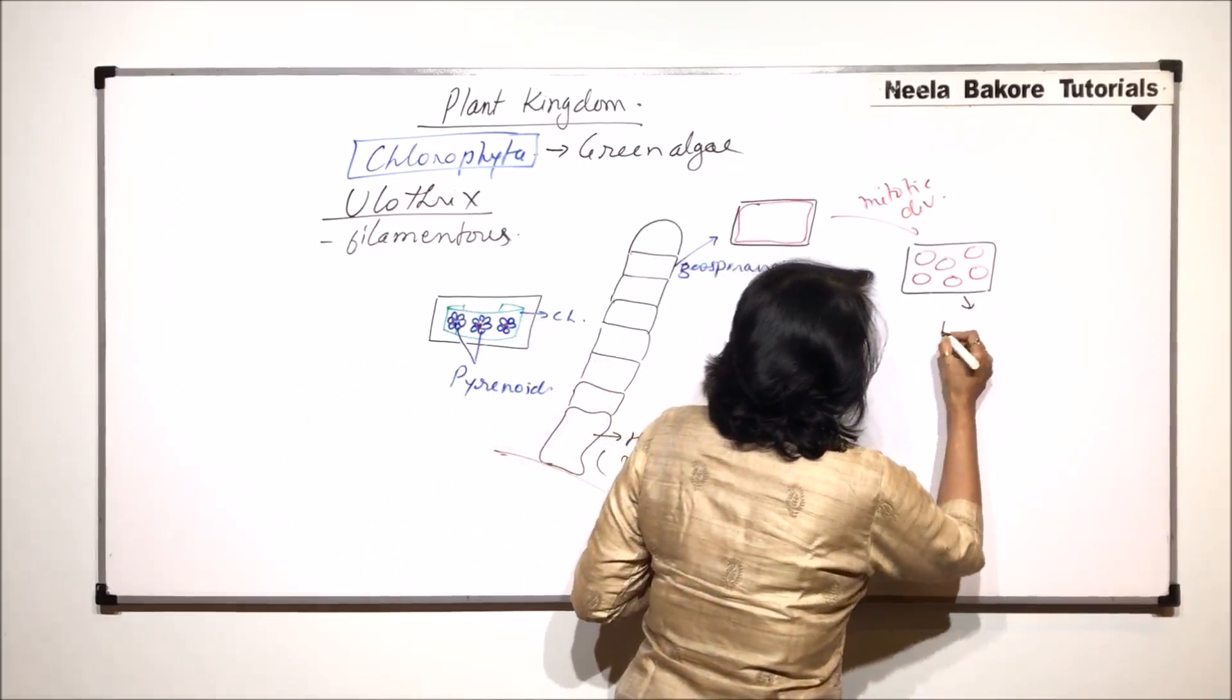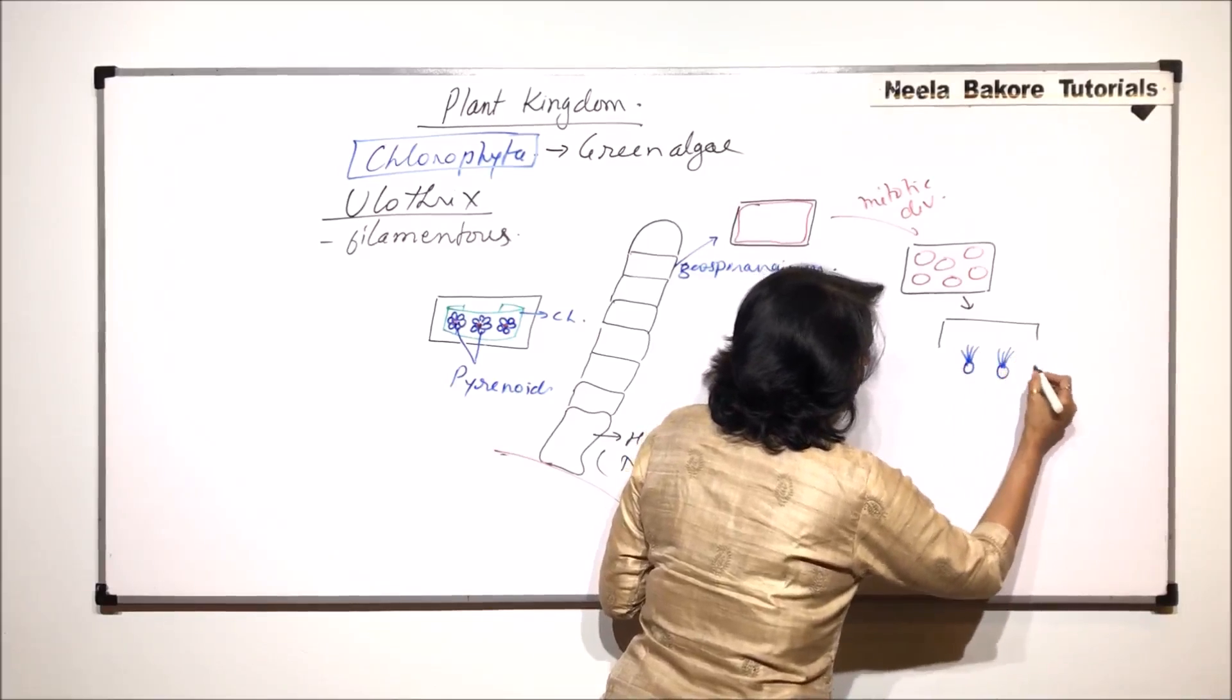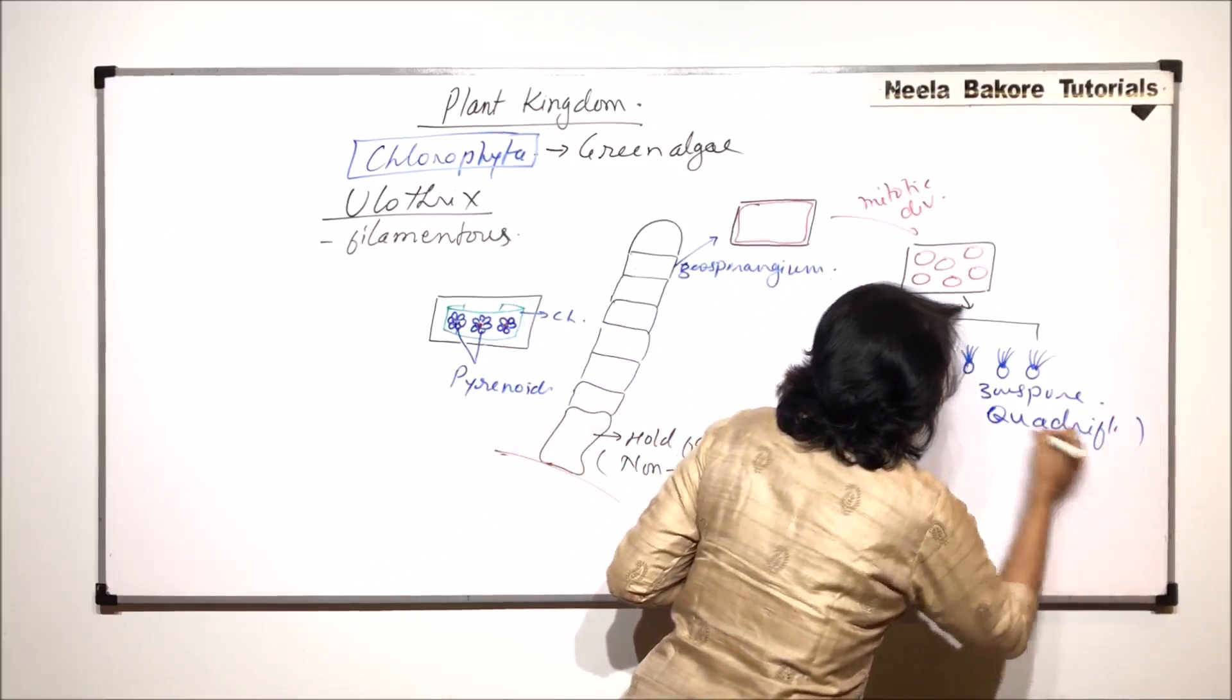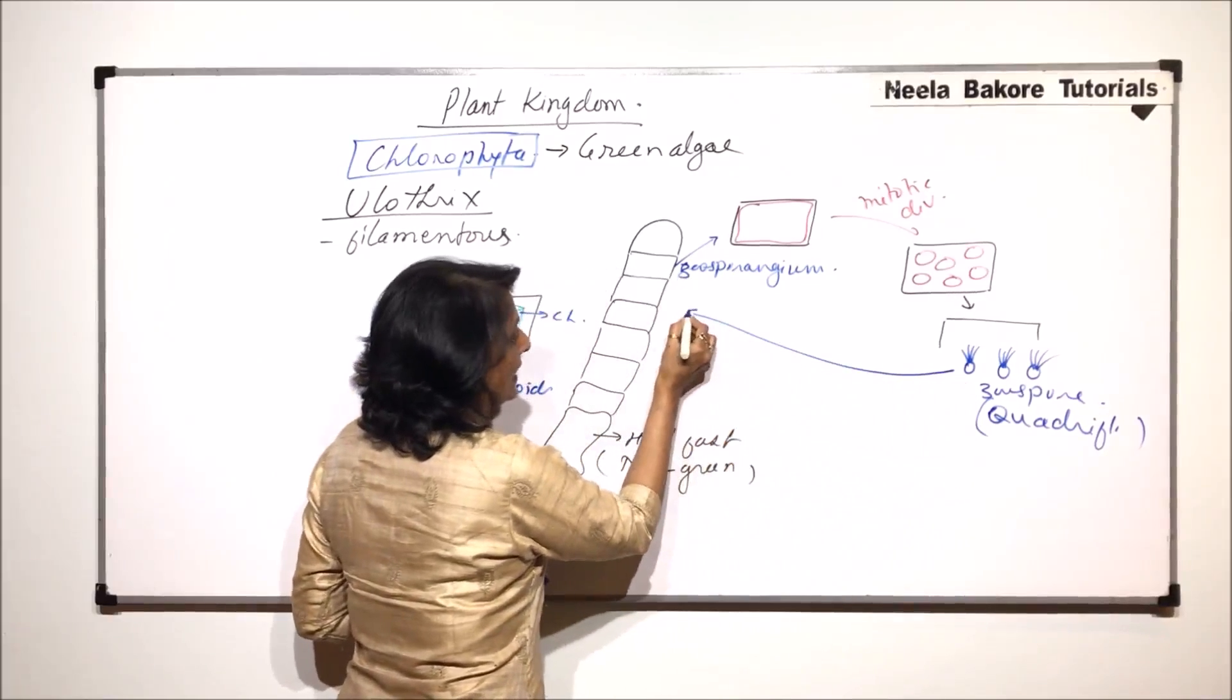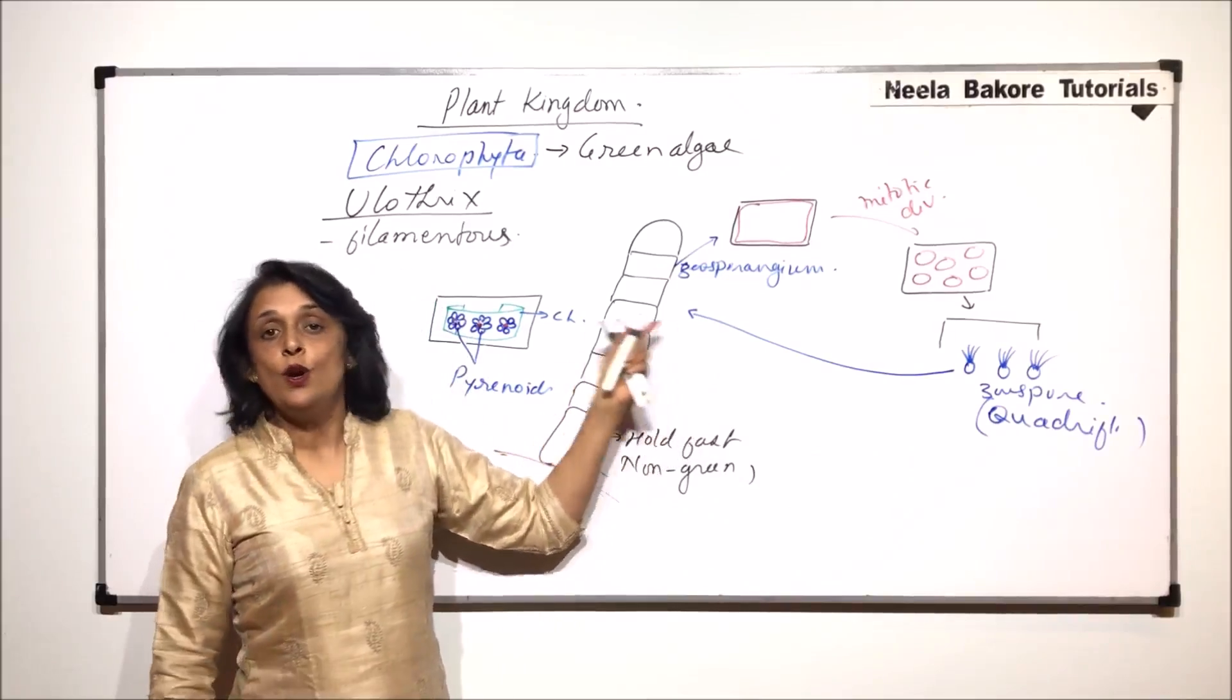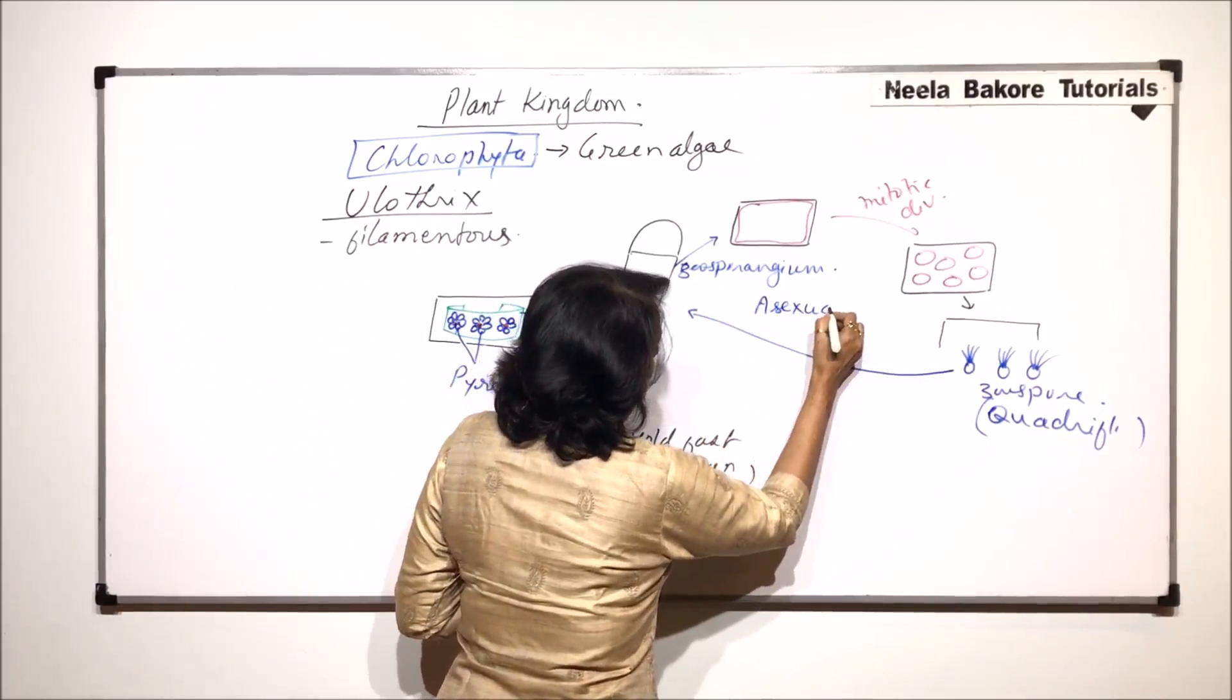And now this is going to rupture. When the cell ruptures there are zoospores which are released. And if you observe it carefully these zoospores are quadriflagellate. They are quadriflagellate. That means they have four flagella. And now these zoospores again grow to form the filament. They would attach to a substratum through their anterior end, lose their flagella, and each zoospore will give rise to a complete filament that is the ulothrix. So this is asexual mode of reproduction. This is asexual reproduction.